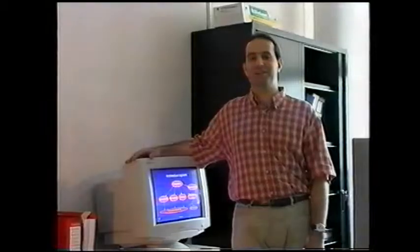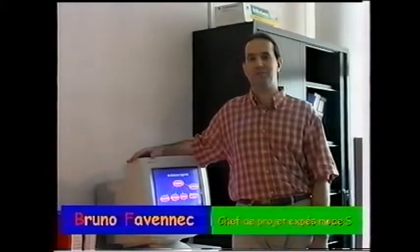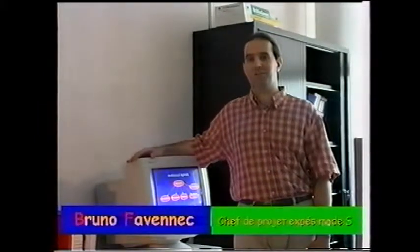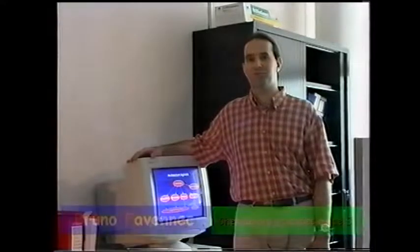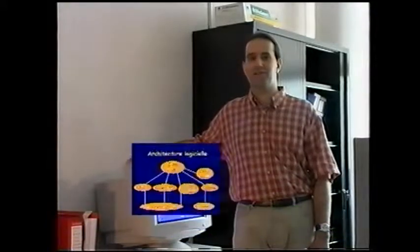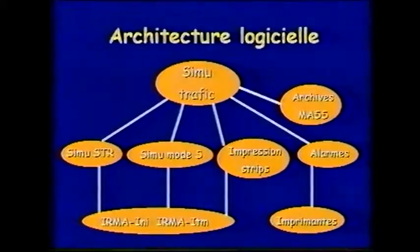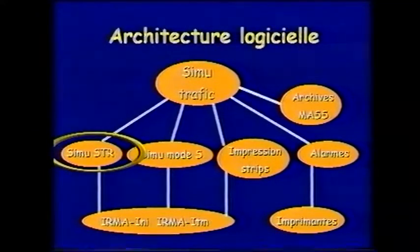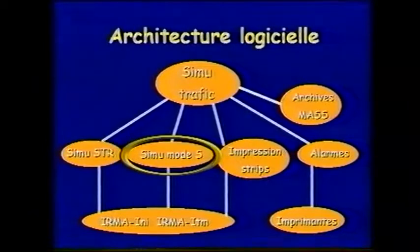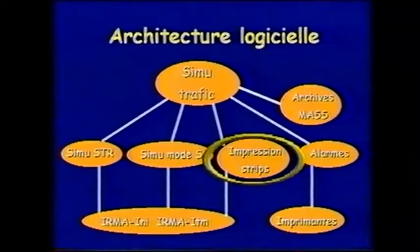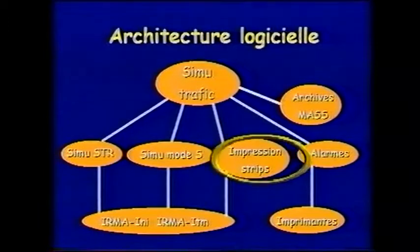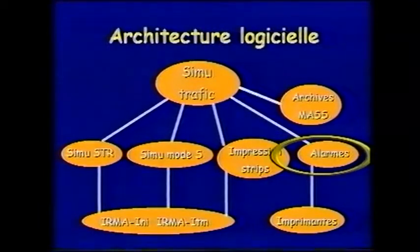Le simulateur ESCAPAD utilise le générateur de trafic MASS. Ce générateur alimente des modules chargés de construire les données telles qu'elles seraient produites par le système opérationnel. Cela inclut la simulation du système de traitement radar, la simulation de la liaison de données mode S et l'impression des strips. En outre, un module est chargé d'élaborer les alarmes spécifiées dans ESCAPAD.